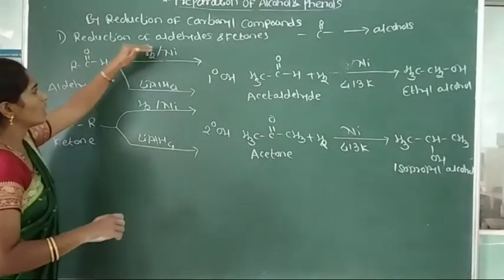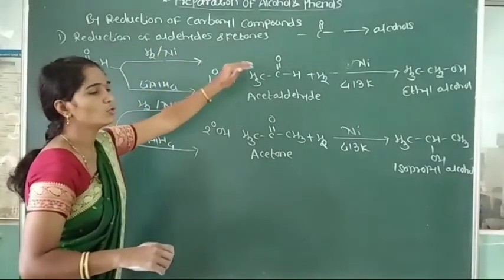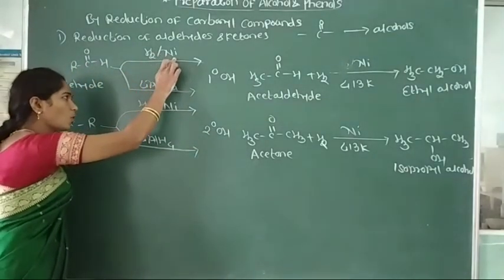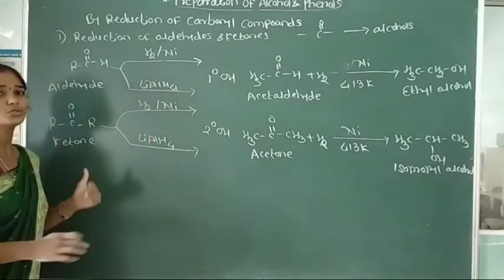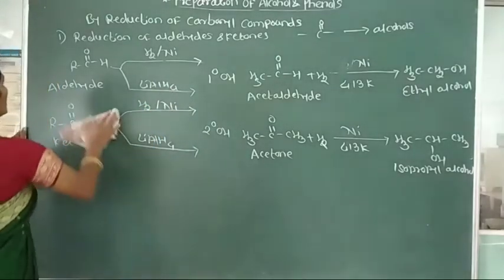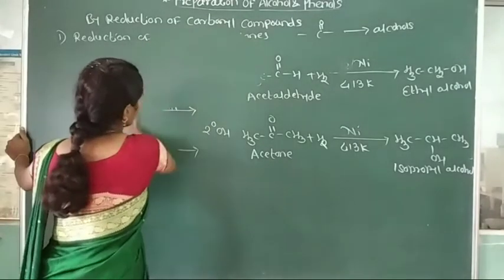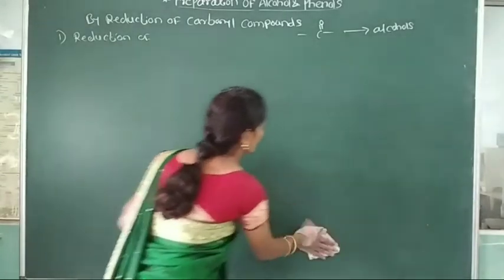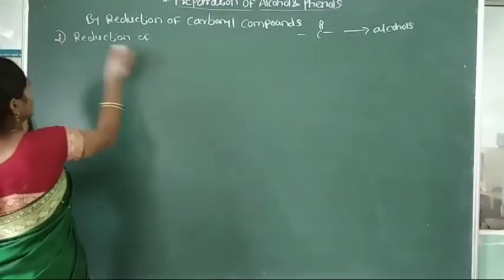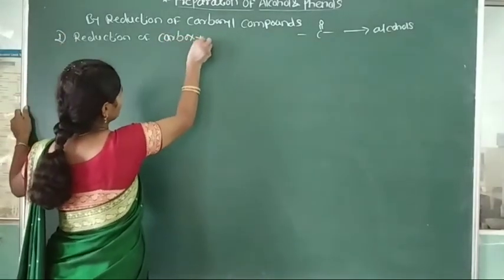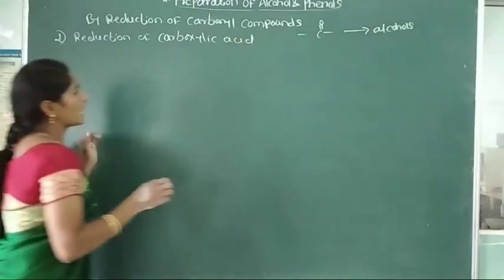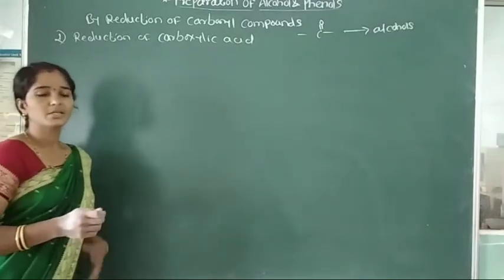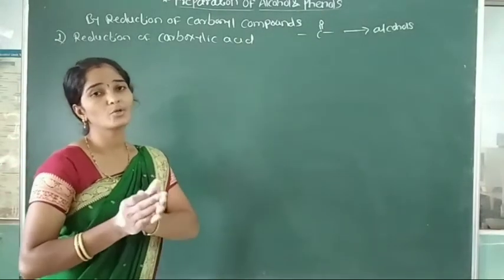This is the first method: reduction of aldehyde and ketone into their corresponding alcohol by using hydrogen in presence of nickel catalyst. Second carbonyl compound: reduction of carboxylic acid. This carboxylic acid requires a strong reducing agent to give formation of alcohol.